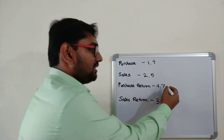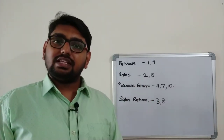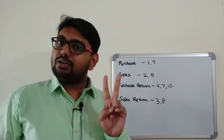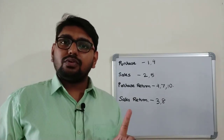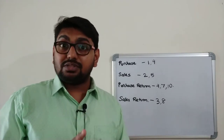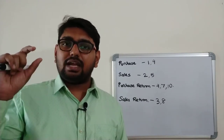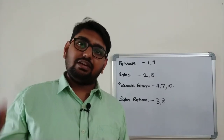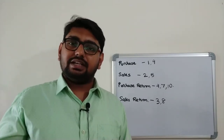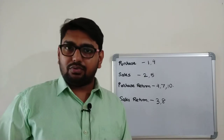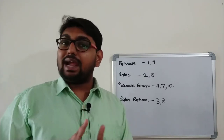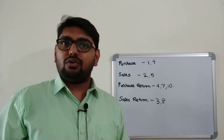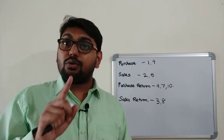Now that we have classified the sum properly, let us move on to drawing the books. There are two approaches: make all subsidiary books together, or do one book at a time. I prefer to do one book at a time. Let us move on to drawing the format, but first let me show you the question with the markings — I have written P, S, PR, and SR besides the transactions.